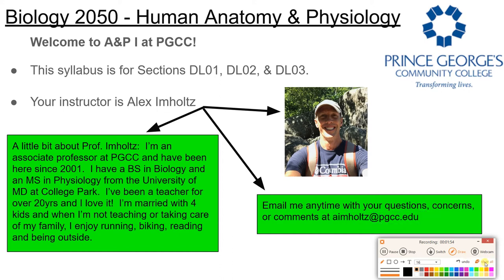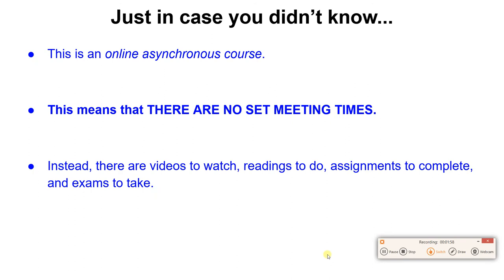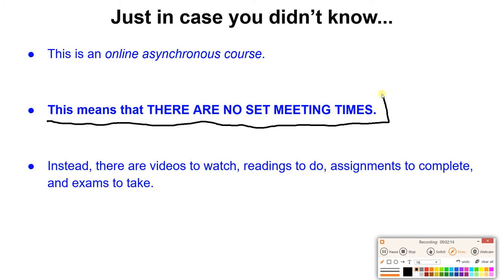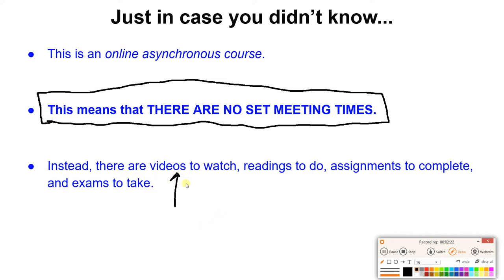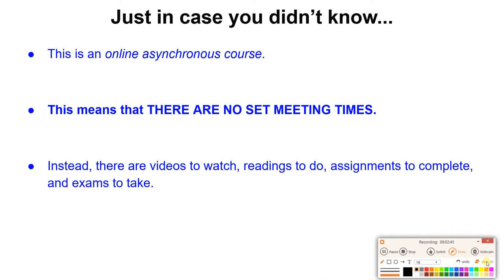Let's talk a little bit more about this class. This is what is called an online asynchronous course. This means that we do not have any meeting times — there is no classroom where we meet. Instead, you're going to be watching videos, doing readings, doing assignments, and taking exams. There are no set meeting times. I will have office hours where I'm available for you to come chat and ask questions, but it's not like a set class time.